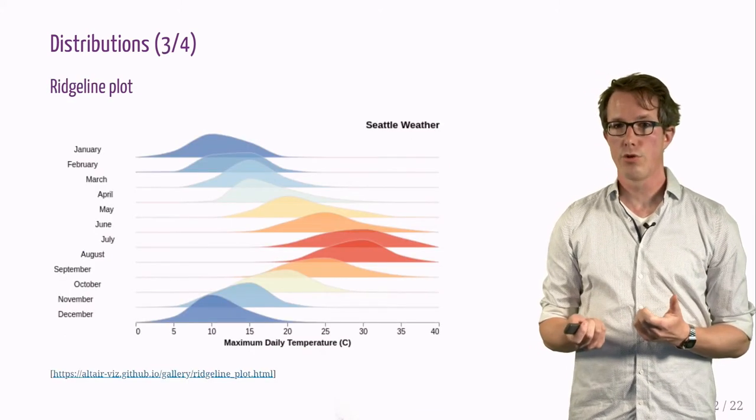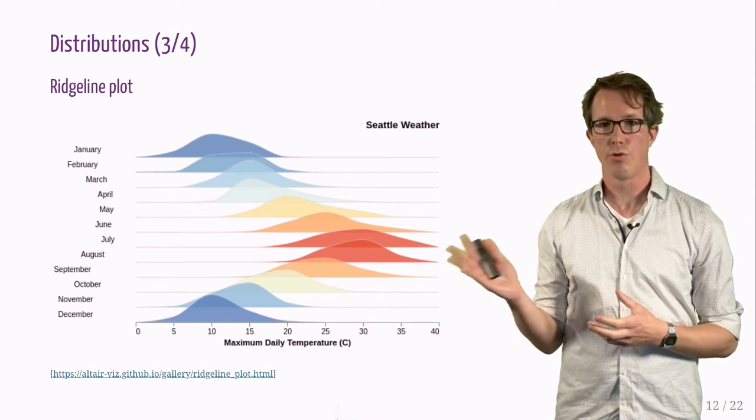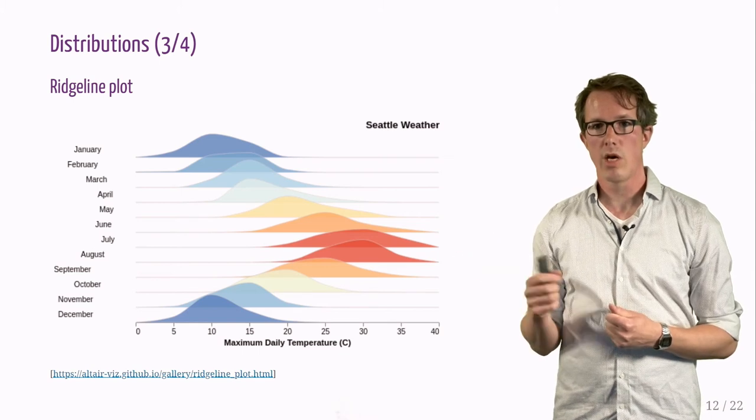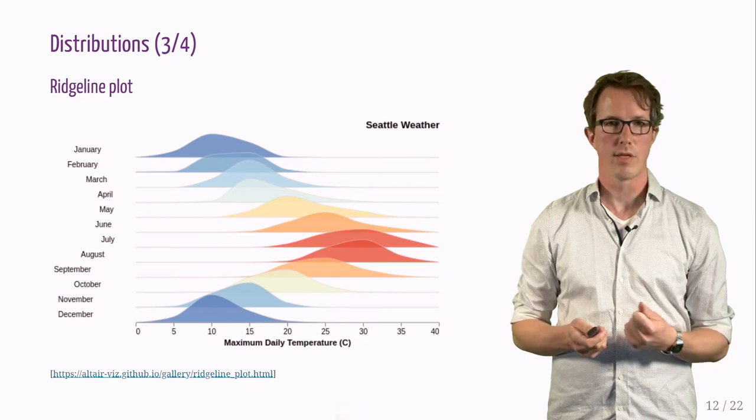An interesting solution to show several distributions in one plot is this so-called ridgeline plot. In this case, we are plotting temperature distributions for the 12 months in Seattle, as an example.